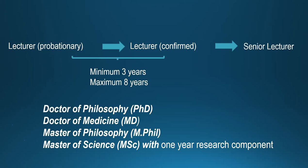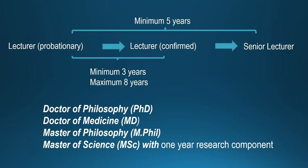From lecturer confirmed to senior lecturer: if you entered the university as a lecturer probationary and want to become a senior lecturer, you have to wait for a mandatory five-year period. If you finish your postgraduate degree before five years from the effective date of that qualification, you will remain as a lecturer confirmed until you fulfil the five-year period, and then you will be promoted to the senior lecturer grade two position.